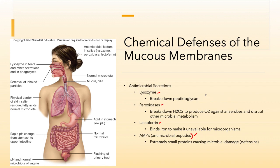Lysozymes are responsible for the breakdown of peptidoglycan. They are going to be most effective — if you think about the structure of bacteria — against gram-positives. Gram-positive organisms tend to be found more often on our skin and on the exterior of the body. They can withstand high salt concentrations and very dry environments. So if we have mucosal membranes near the surface of our drier skin, they're going to come into contact with more gram-positive organisms.